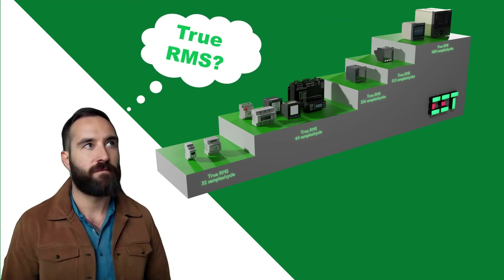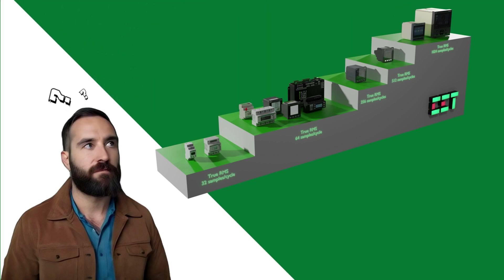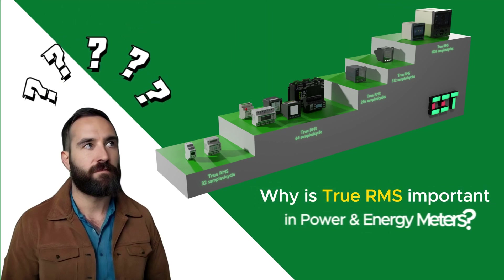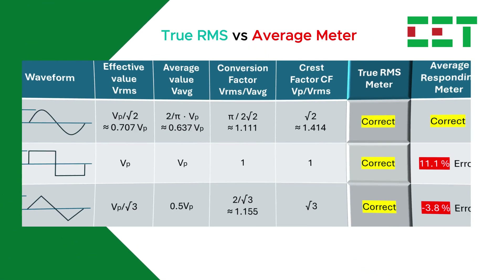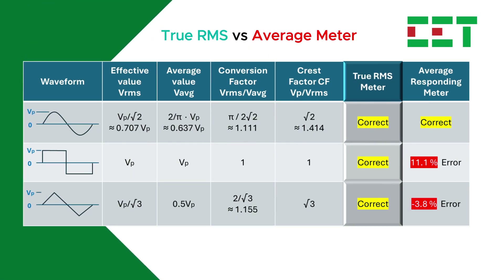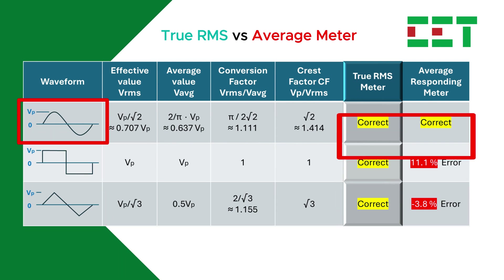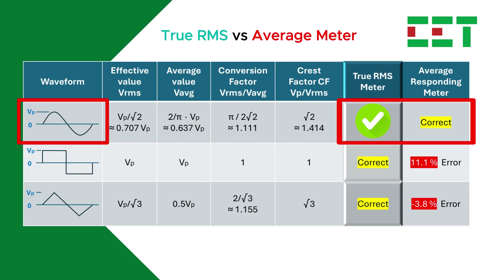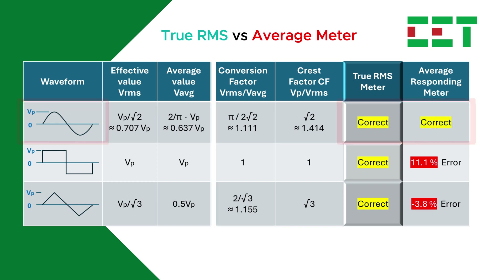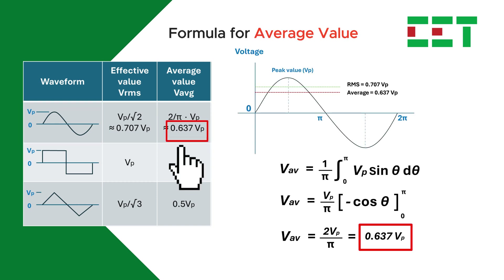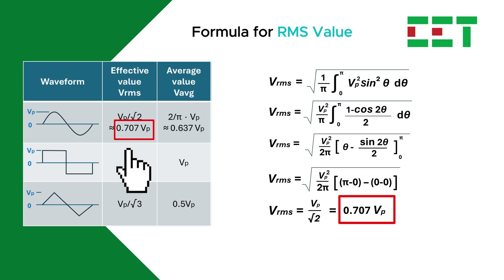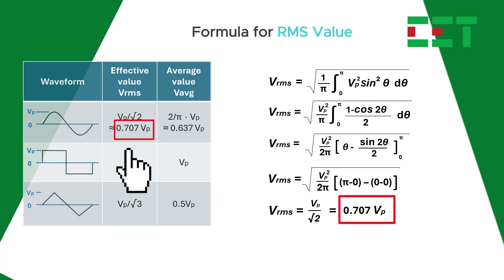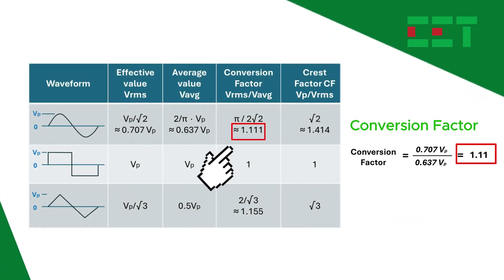CET's meters come with true RMS measurements and different sampling rates. Why is true RMS important? Let's look at this table, taking voltage measurement as an example. As you can see, for a pure sinusoidal waveform, both the averaging meter and true RMS meter can accurately measure a sine wave. The basic formulas for the average and RMS calculation, and the conversion factor of 1.11, are demonstrated as follows.